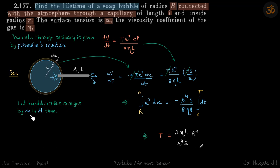So that's what we have written here. Let the bubble radius change by dx amount in dt time. So one way to write dV by dt is dV can be written as minus 4 pi x squared dx. So we have added minus here because dx is negative, so by adding minus we are making the whole term positive. So minus 4 pi x squared dx by dt.